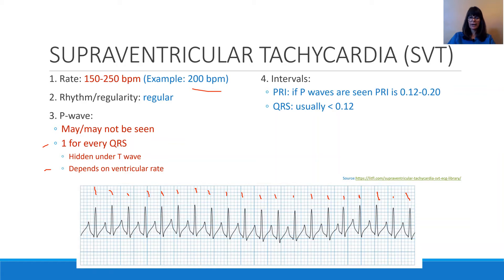We can certainly look at our QRS complexes. I like to start by looking at them when they start at a bigger line box here. So measuring — one, two for the QRS — which makes the QRS 0.08, which is normal, less than 0.12. Therefore, the QRS is normal, and we know that this is a dysrhythmia that has to do with the atria or above the ventricles.